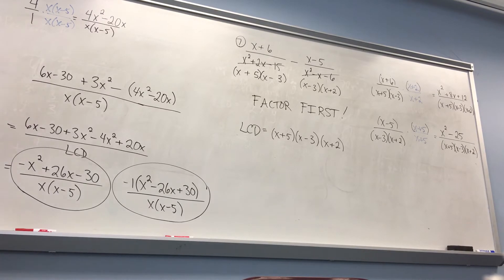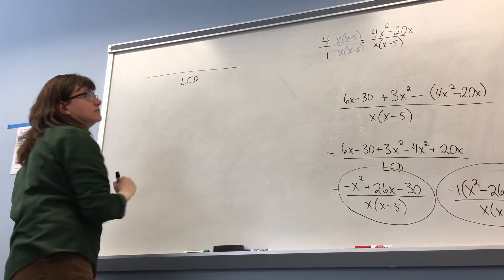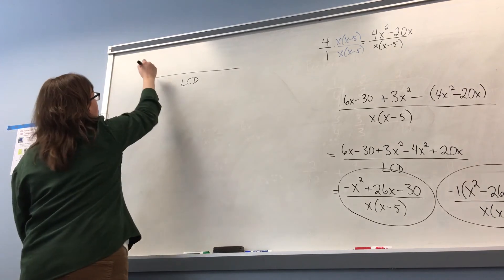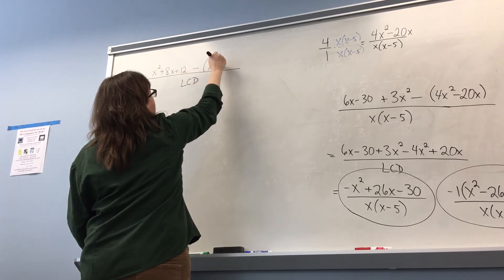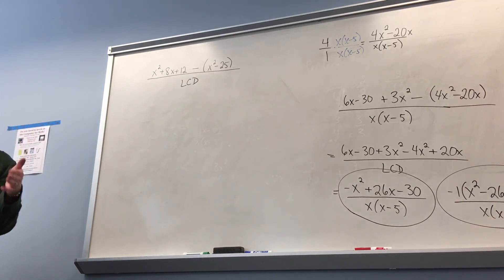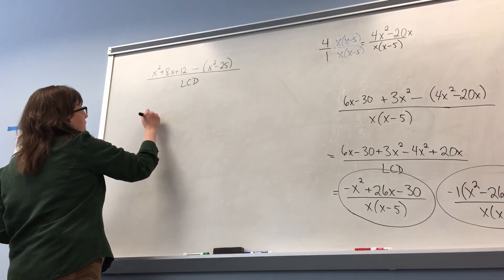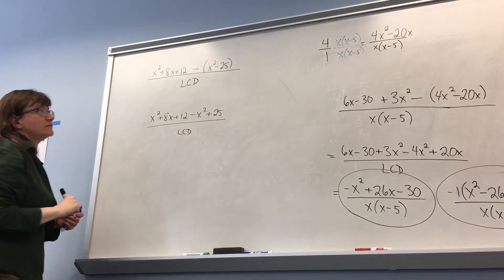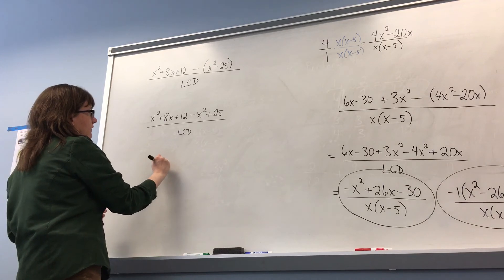Now all of my fractions have the same denominator, so I can write the LCD on the bottom. Along the top, the first fraction was x squared plus 8x plus 12, and then I'm subtracting x squared minus 25. When you're subtracting, you need to make sure you subtract every term, so put parentheses around what you're subtracting. Distributing the minus: x squared plus 8x plus 12 minus x squared plus 25, all over the LCD. Combining like terms gives 8x plus 37.